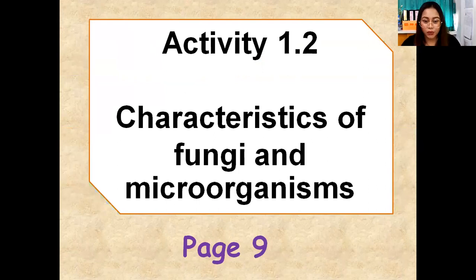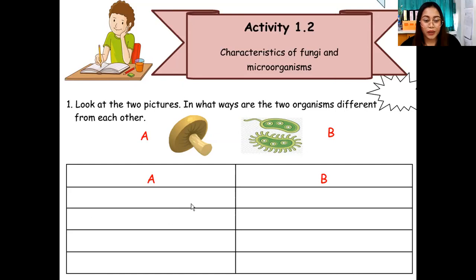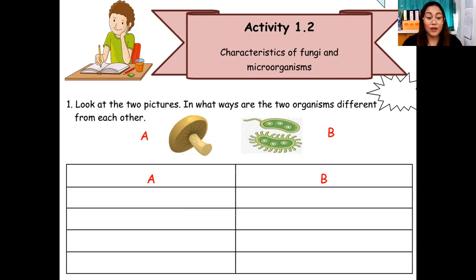Please open your book on page 9 — Activity 1.2: Characteristics of Fungi and Microorganisms. You are going to write the characteristics under letter A, which is fungi, and letter B, which is microorganisms. Please ready your pencil and eraser. What is the first characteristic of A — fungi? You can look at your book on page 7. Yes — fungi: fixed in one position. Correct!